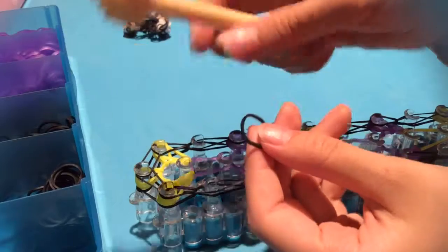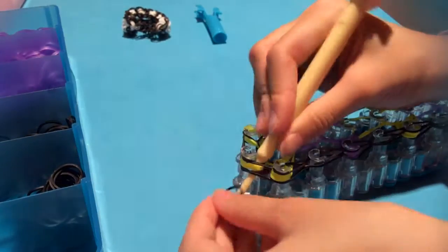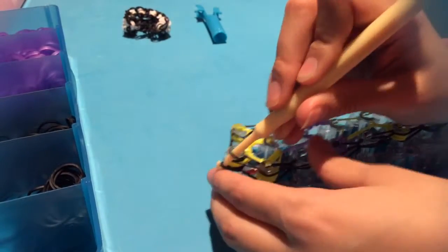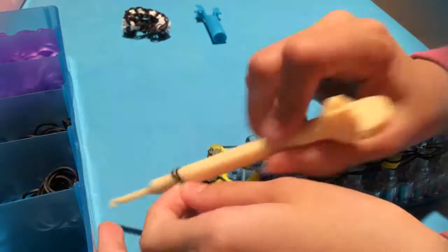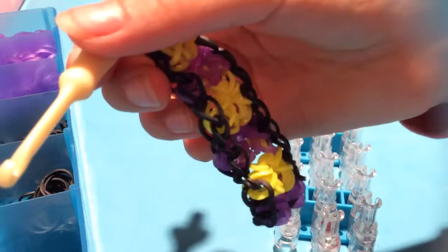So now you take a black band and go beneath all of those. Make sure you put it right here onto your hook on the thickest part. I'm going to skip the pulling off because it takes me a long time.